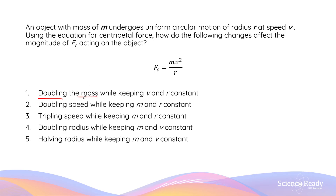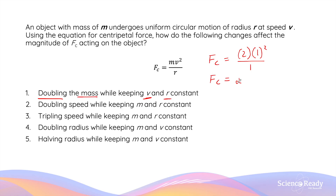If we double the mass while keeping speed and radius constant, we replace m with 2 and substitute 1 for the other variables. This gives a factor of 2, meaning the centripetal force required doubles. If the mass becomes twice as heavy, the magnitude of centripetal force needed is twice as large.